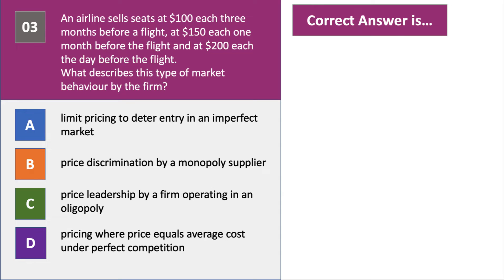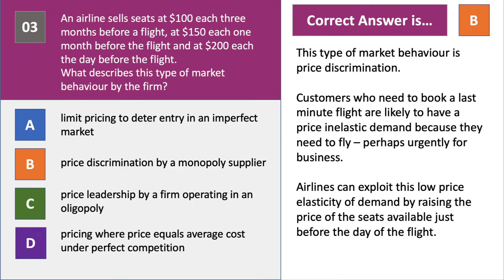The right answer is B — it's price discrimination. Typically, people who need to fly and book the day before have a price-inelastic demand curve, a low coefficient of elasticity — perhaps they need to fly for business. Airlines can exploit this by charging a high price to people who need to book right up to the last minute, because travel is a necessity. A good example of price discrimination.